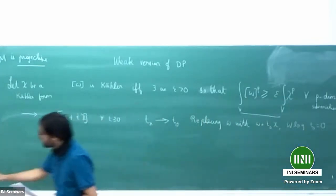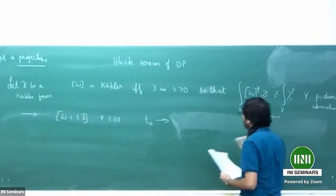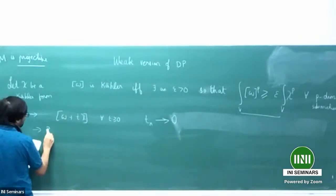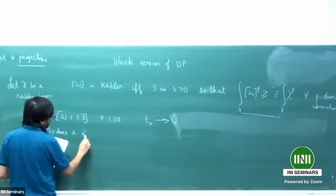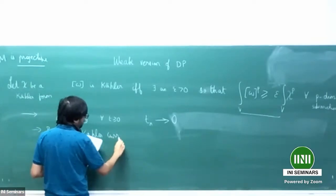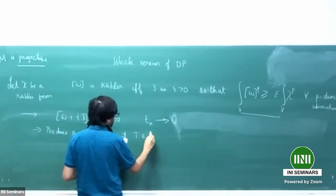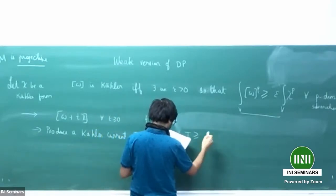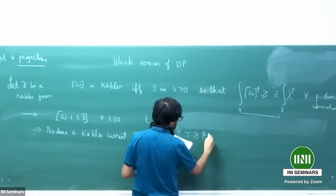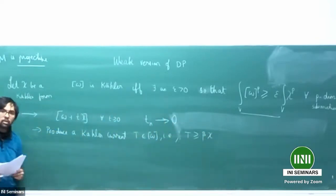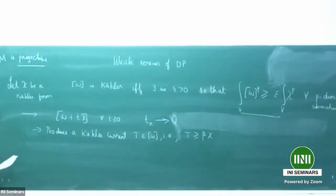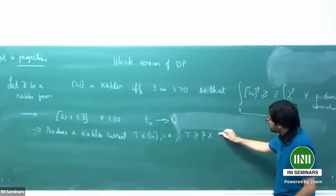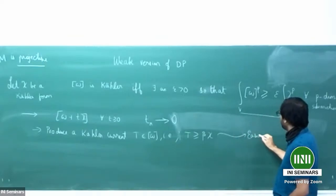So the first step, assuming without loss of generality that t naught is zero, is to produce a Kähler current — that is, a current satisfying beta times a Kähler form. How does one produce a Kähler current? The idea is as follows. What Demailly and Paun did; this step is easier in the projective case.